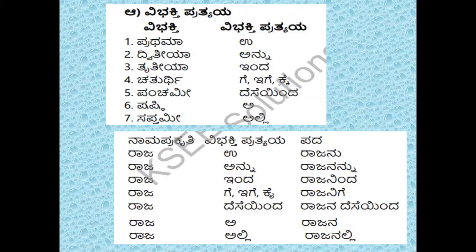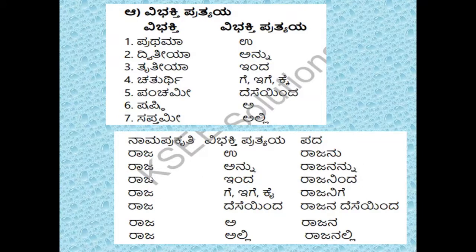For example, namaprkriti means noun. Raja plus u — Pratama means first, Dvitiya second, Tritiya third, these are sequential numbers in Sanskrit. Raja plus u becomes 'rajanu' — it's not 'raja u', that gives no meaning. Raja plus annu becomes 'raja nannu'.